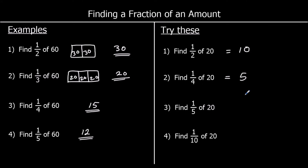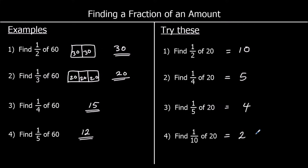Question 3: find one fifth of 20. So this time we're splitting into five bits. 20 divided by 5. How many fives make 20? That's four. And question 4: one tenth of 20. So 20 split into 10 bits, they would each be worth two.